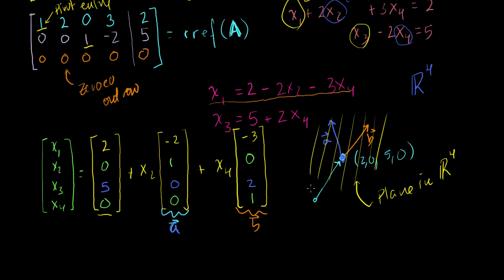I know that's really hard to visualize, and maybe I'll do another example in three dimensions. But hopefully this gives you a decent understanding of what an augmented matrix is, what reduced row echelon form is, and what are the valid operations you can perform on a matrix without messing up the system.